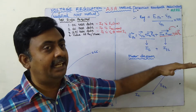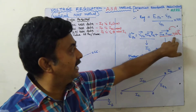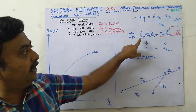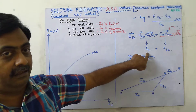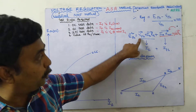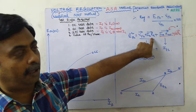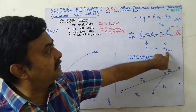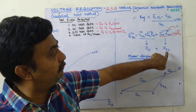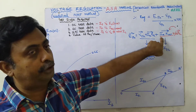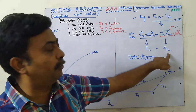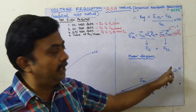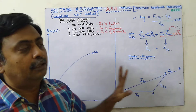In the MMF method, we won't consider the leakage reactance drop because leakage reactance is treated as part of the armature reaction drop. We find the field current IF1, required to produce rated voltage and overcome the IA·RA drop, and IF2, the field current required to overcome the armature reaction drop. Then we add IF1 and IF2 using the cosine formula to get IF0.